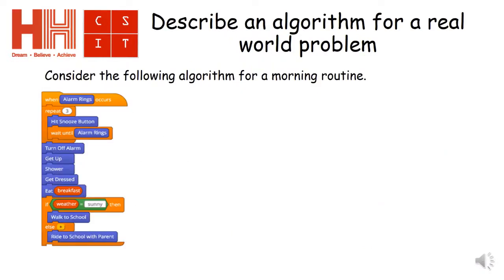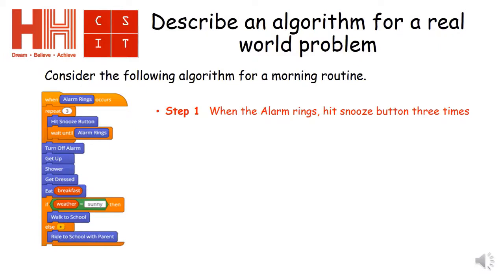So we're now going to describe an algorithm for a real-world problem. I'm going to consider the algorithm shown below, which shows the algorithm for a morning routine. Now that's written in code at the moment, but if I was going to put it into step-by-step instructions, I'd start with the first section: when the alarm rings, we're going to hit the snooze button three times — and you can see that's represented on the left with a repeat three. Finally, once we've done that, we turn the alarm off.